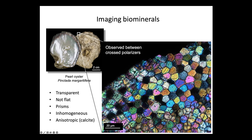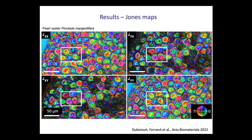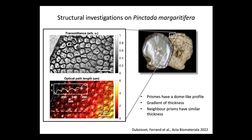We have performed vectorial ptychography measurements on this kind of sample and obtained these Jones maps — four maps corresponding to the solution. I will focus on a selected rectangle to show what kind of structural information we can extract from this Jones matrix. First, we can get the map of retardance, which is what we would have seen in a normal transmission microscope. We also have the map of the optical path length, related to the thickness of the prisms, where you can see from left to right a gradient of thickness, with every prism behaving like a small bump. Importantly, neighboring prisms have very similar thicknesses.